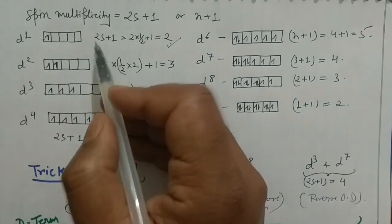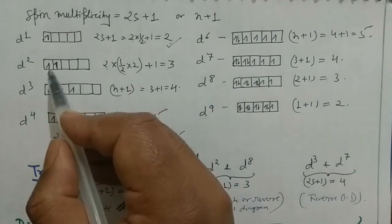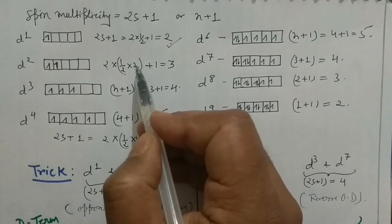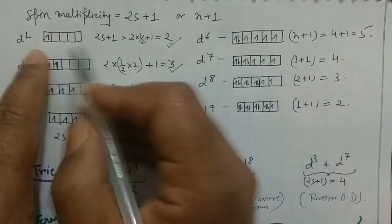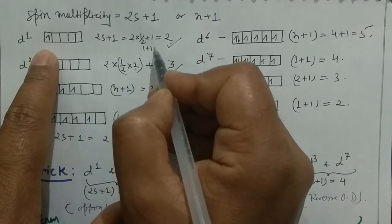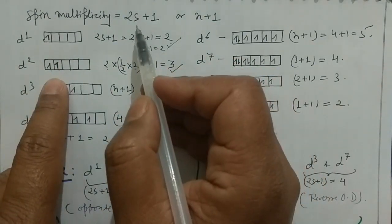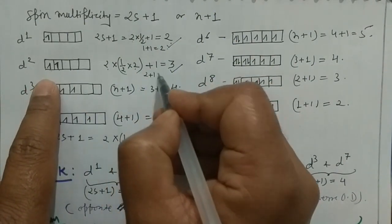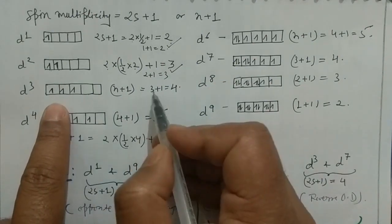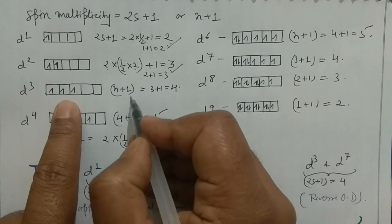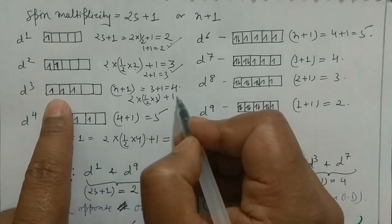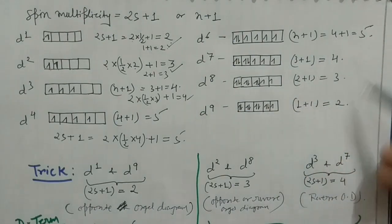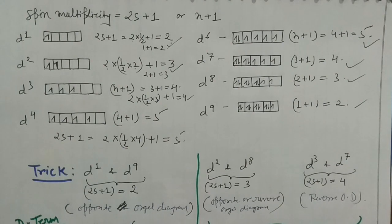Using this exercise for all d systems — d2, d3, d5, d7, d8 — you get spin multiplicities of 2, 3, 5, 7, 8 respectively. A very common observation: D9 has spin multiplicity 2 and D1 also has spin multiplicity 2. So D1 and D9 octahedral diagrams will be opposite/inverted to each other. This is a trick I developed: same spin multiplicity means inverted Orgel diagrams.